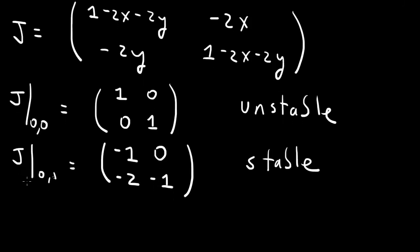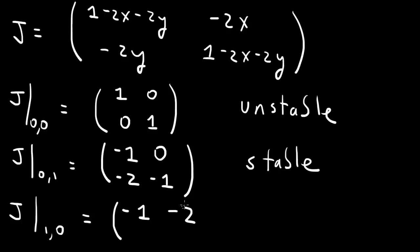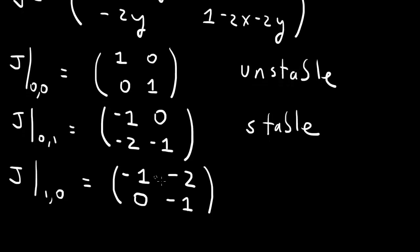Now let's look at (1, 0). With x equals 1 and y equals 0: the (1,1) entry is 1 minus 2 equals minus 1, the (1,2) entry is minus 2, the (2,1) entry is 0, and the (2,2) entry is 1 minus 2 equals minus 1. This is an upper triangular matrix, so the eigenvalues are just the diagonal elements: minus 1 and minus 1. The real part is negative, so (1, 0) is a stable fixed point.